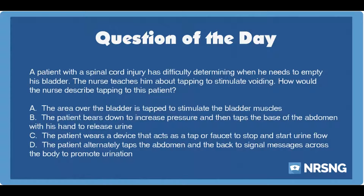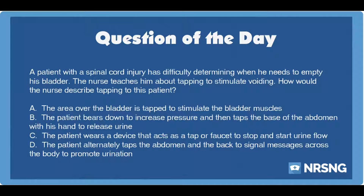A. The area over the bladder is tapped to stimulate the bladder muscles. B. The patient bears down to increase pressure and then taps the base of the abdomen with his hand to release urine. C. The patient wears a device that acts as a tap or faucet to stop and start urine flow. D. The patient alternately taps the abdomen and the back to signal messages across the body to promote urination.